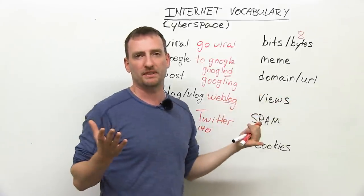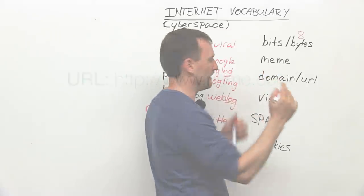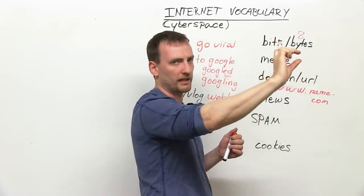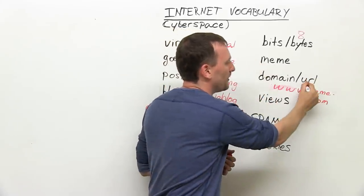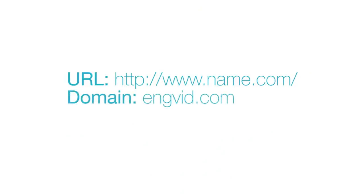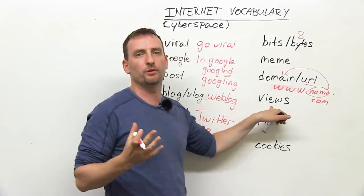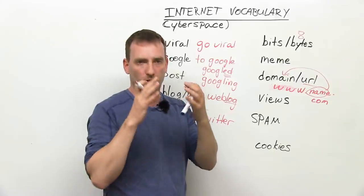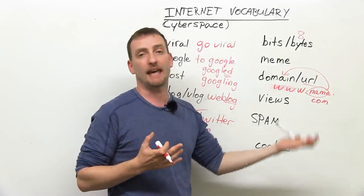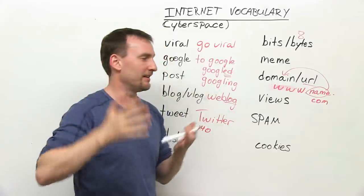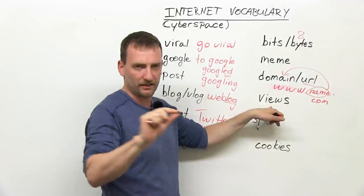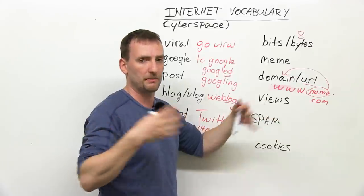Domain is basically a website. The URL is the address. So for example, www.name.com — this whole line that you put in the top bar of your internet browser, whether it's Explorer, Mozilla, or Firefox — this is the URL, that's the address, and this is the domain. Views means how many times your site, your video, your picture, or your post has been looked at. So now you have to think about see, watch, look, and view — you've got another word in the mix. If you go to YouTube, most videos will have underneath a number of views — how many people have seen this.